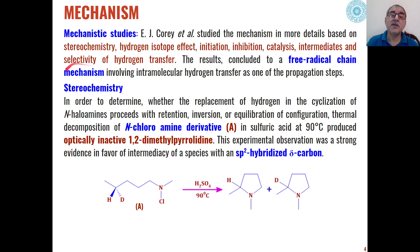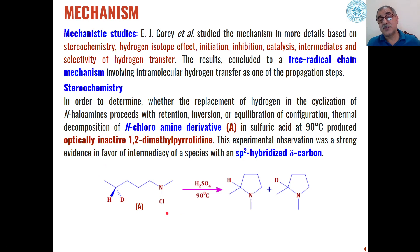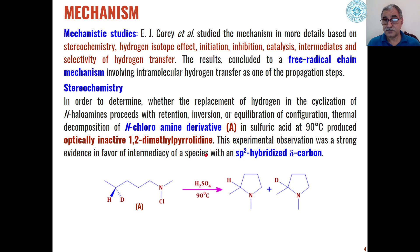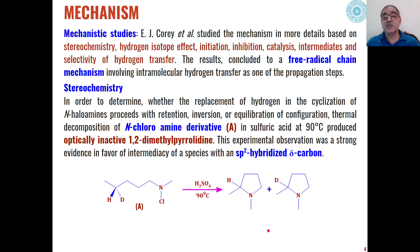For example, when Khoury studied stereochemistry using optically active N-chloro-amines where the delta carbon was bearing a hydrogen and a deuterium — because of this it is an optically active N-chloro-amine — when this was reacted with sulfuric acid at 90 degrees centigrade, the product formed was an optically inactive 1,2-dimethyl pyrrolidine. The formation of this optically inactive product concludes that there is an intermediate species where the delta carbon will have an sp2 hybridized structure.